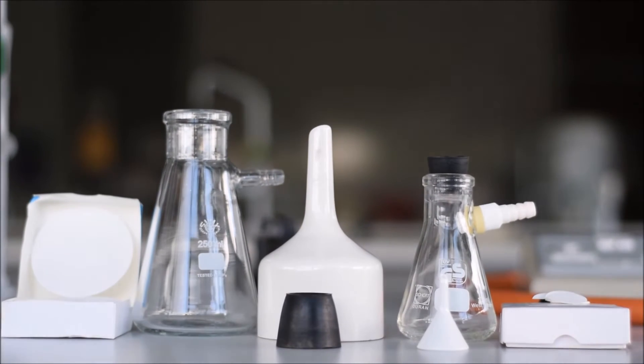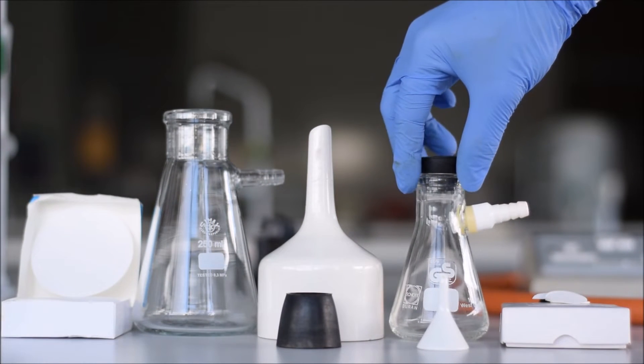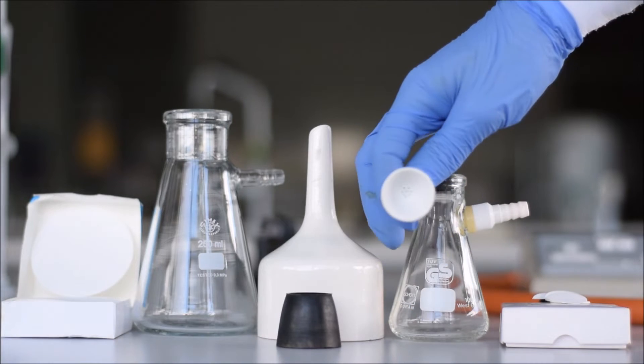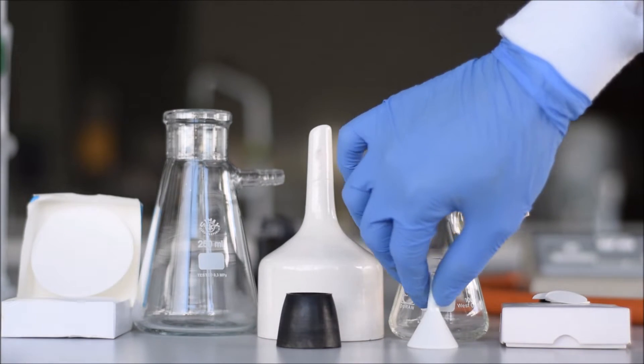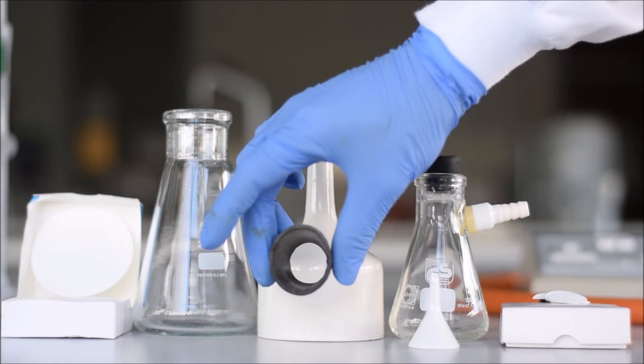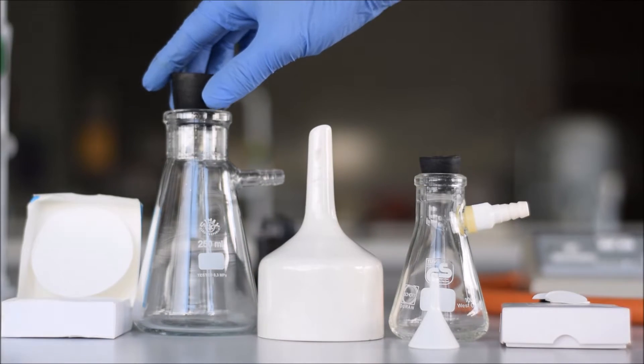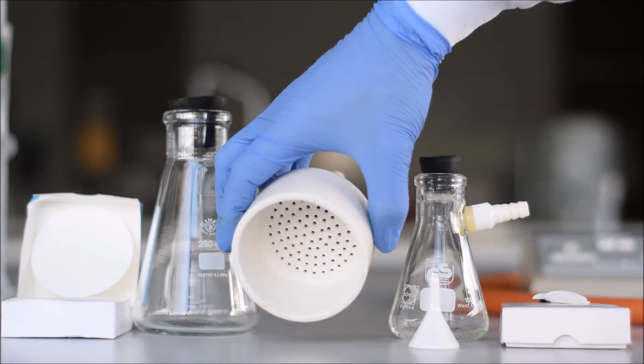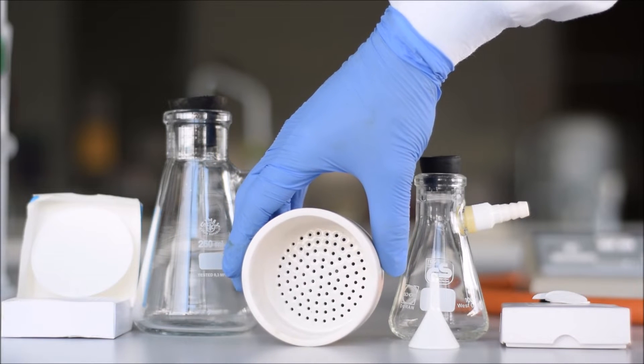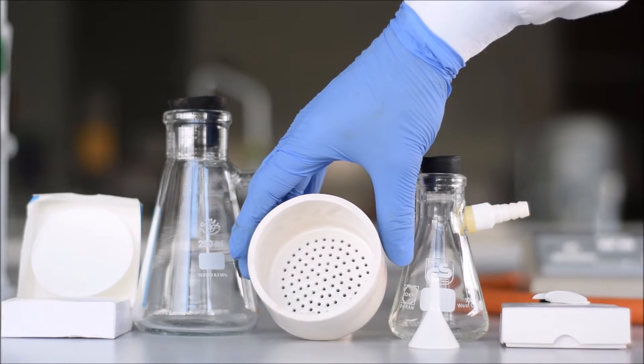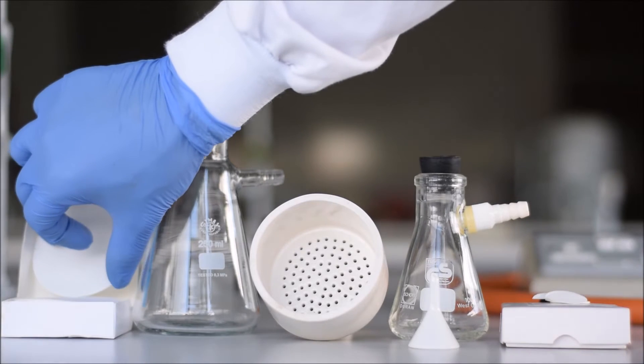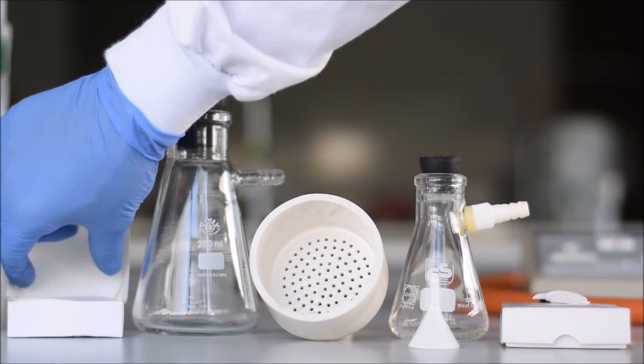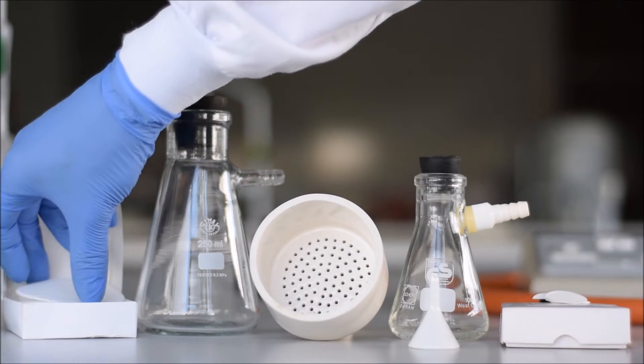The third option are Buchner funnels and Hirsch funnels. This tiny funnel you see here is called a Hirsch funnel and its bigger brother is called a Buchner funnel. Buchner funnels and Hirsch funnels both use Buchner flasks, which are conical flasks with the sidearm that are specially reinforced to withstand the vacuum. The black rubber ring you see is otherwise known as a gasket and it allows you to form a vacuum seal between the funnel and the conical flask.